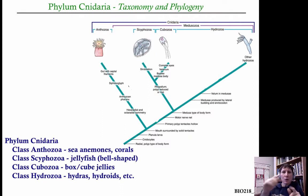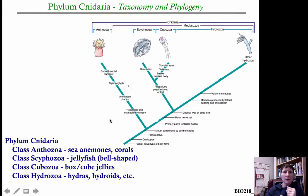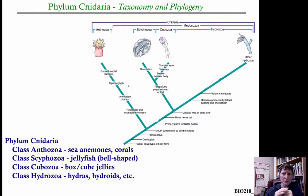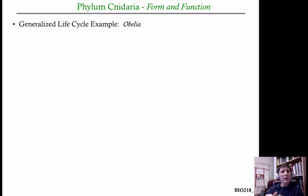The two sister taxa are Scyphozoa and Cubozoa. You need to commit this tree to memory and be able to redraw it. The Anthozoa are sea anemones and corals; the Scyphozoa are the typical bell-shaped jellyfish most people are familiar with; the Cubozoa, their sister taxon, are the box jellies or cube-shaped jellies; and the Hydrozoa is kind of a garbage can group with all kinds of cnidarians — loosely referred to as hydras. A PhD waiting for you if you want to study these.